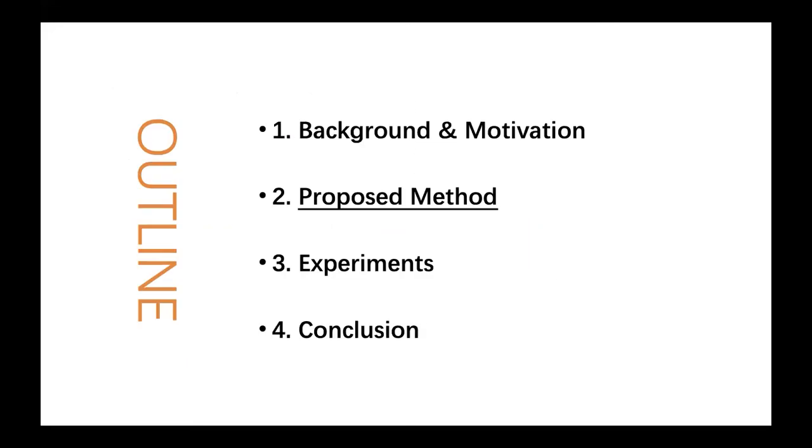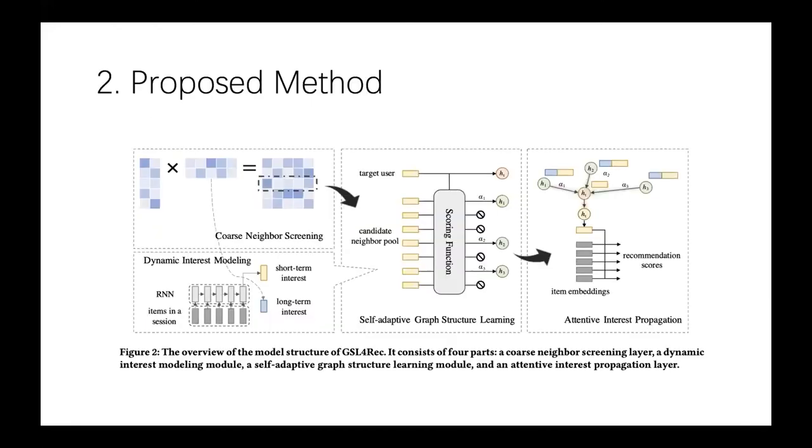Next, I'm going to introduce our methods in detail. Our GSL4REC consists of four core modules: the coarse neighbor screening, the dynamic interest modeling, the self-adaptive graph structure learning, and the attentive interest propagation. These four modules work together. Next, we will introduce these modules in detail.